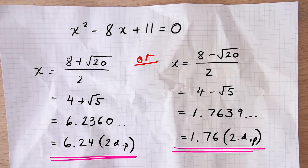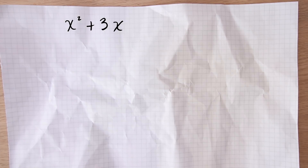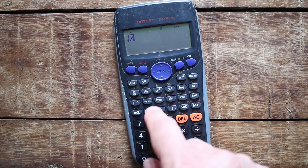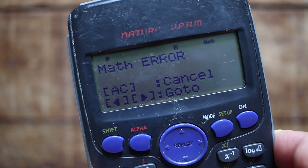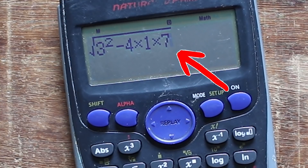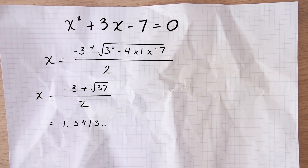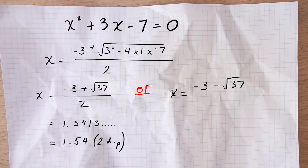Let's do one more example quickly to show one more thing that can go wrong. New equation: x squared plus 3x minus 7 equals 0. So a equals 1, b equals 3, and c equals negative 7. b is positive this time, so negative b is negative 3. 2a is 2 times 1, which is 2. Then we've got the square root of 3 squared minus 4 times 1 times negative 7. If we miss that negative from the 7 we go wrong — including it gives us 37 under the square root, which sounds right. So negative 3 plus root 37 all over 2 gives approximately 1.54, and using the negative square root gives approximately negative 4.54.